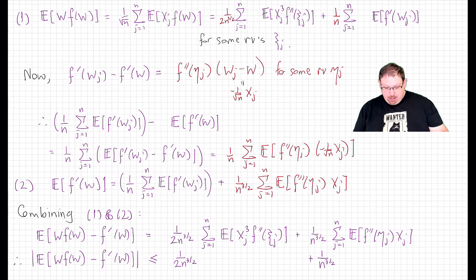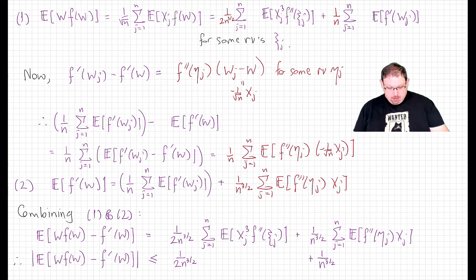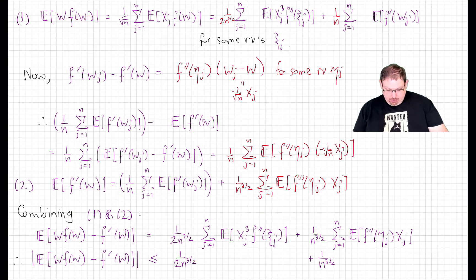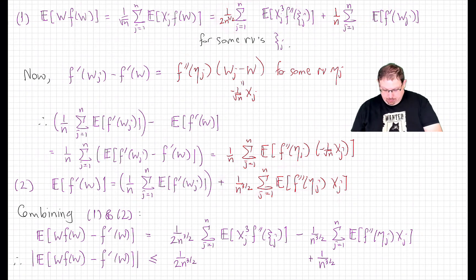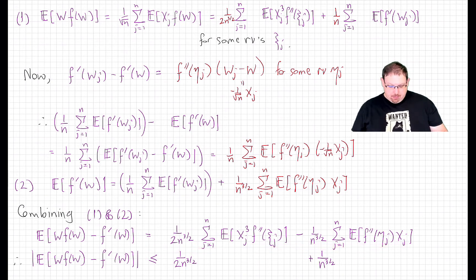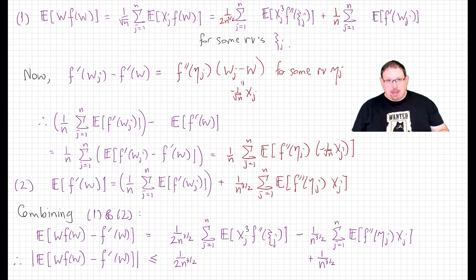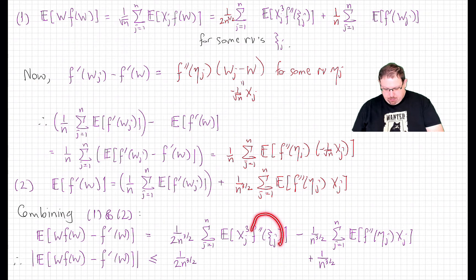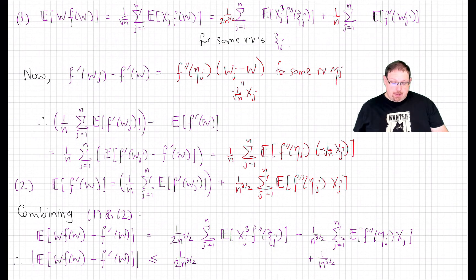Notice that in both resulting terms we have an overall factor of n^{3/2} in the denominator, which is very promising. When we combine and subtract, the leading terms cancel, leaving only differences of error terms involving f''(ξ_j) and f''(η_j). Taking absolute values, applying the triangle inequality, moving expected values inside, and using |f''| ≤ 2 throughout, we get our final bound.